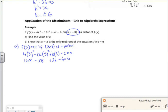So the 108's disappear, I've got 3k is 6, so I've got k is equal to 2. So I know that my function is actually 4x cubed minus 12x squared plus 2x minus 6.